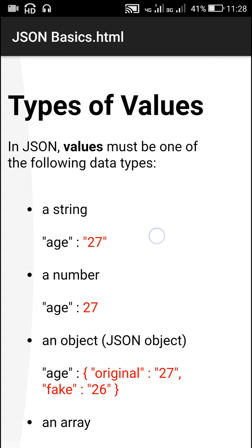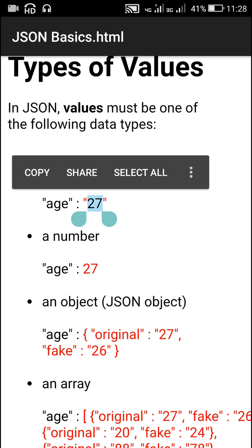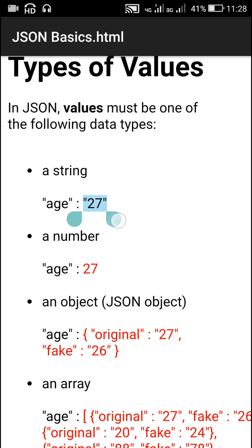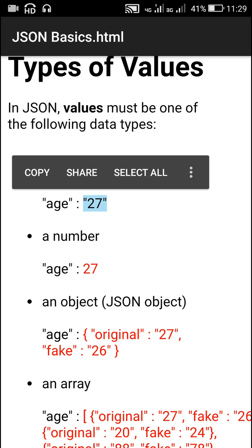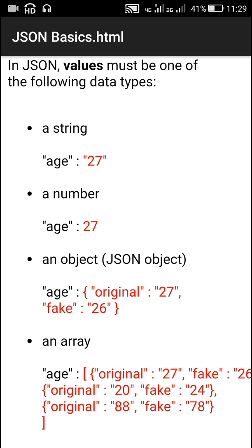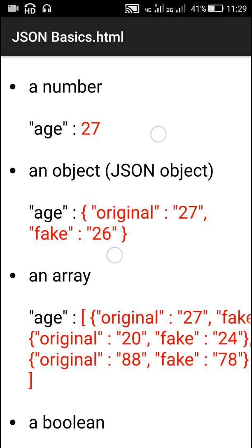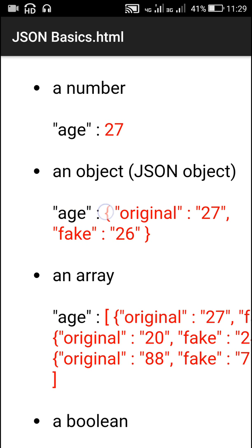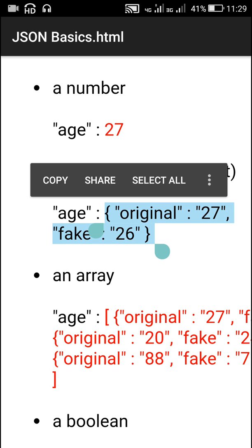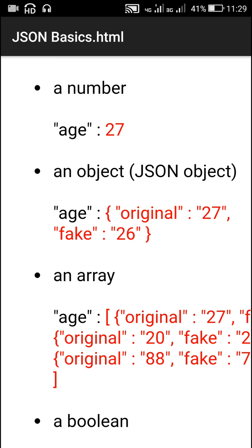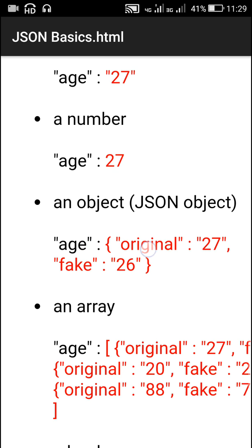The values in JSON must be one of the following types. First, it can be a string — for example, the value '27' enclosed in double quotes is a string. Next, it can be a number of type integer or double — for example, age with value 27 as a number. It can also be a JSON object — for example, for age the value is a JSON object enclosed in curly brackets containing two data items: original and fake, separated by a comma.